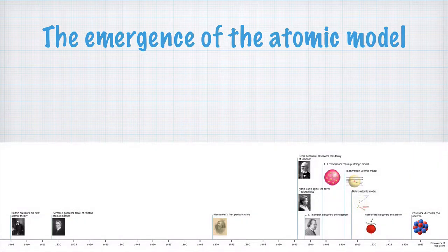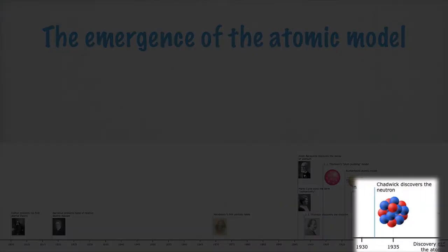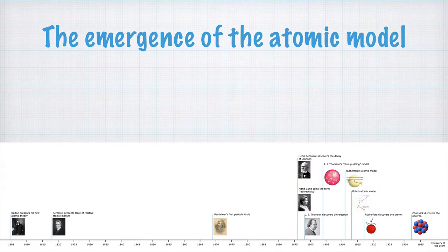Down here you can see a timeline of different events that are important for the discovery of the atom and the emergence of an atomic theory. It starts here in 1805 and ends more than a hundred years later in 1932. And I don't think it's necessary that you copy this timeline. So, what happened in 1805?